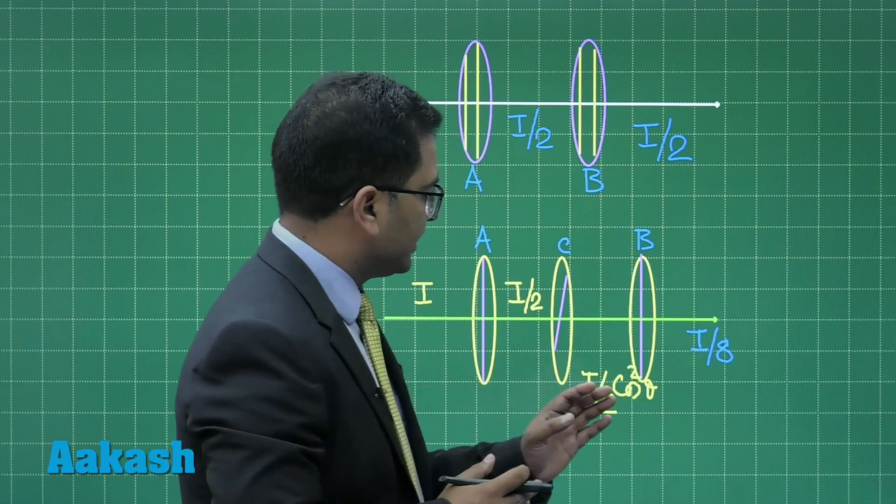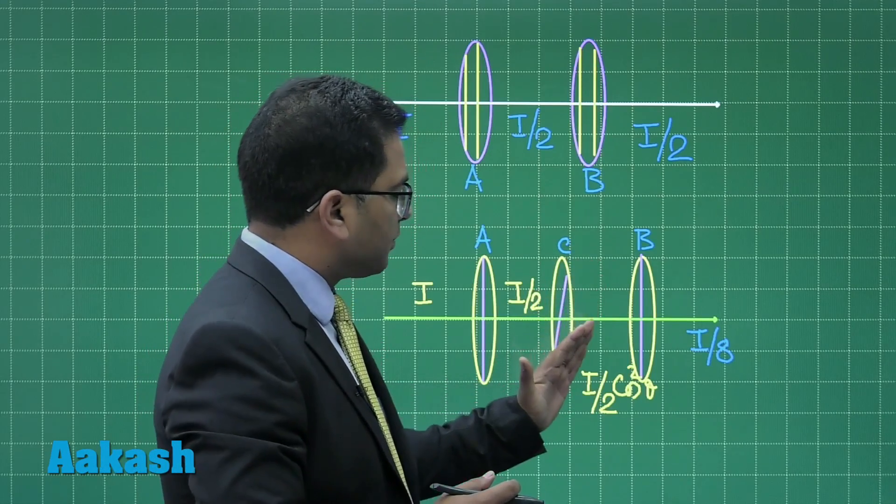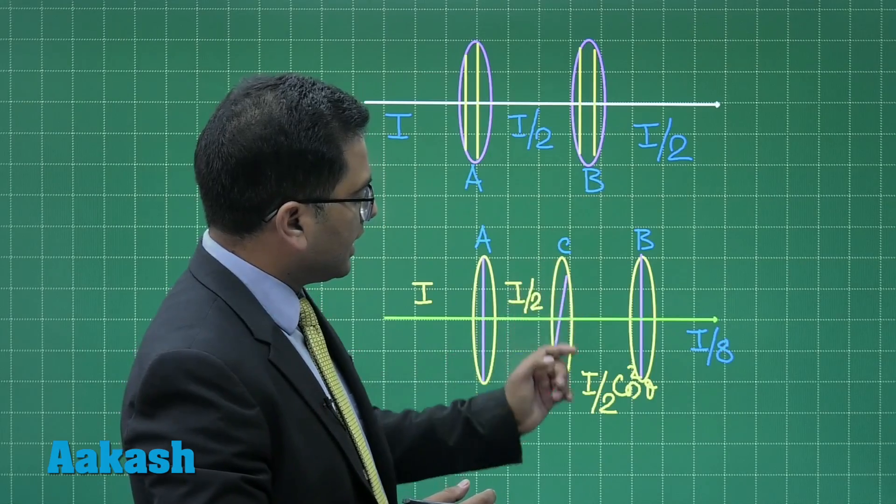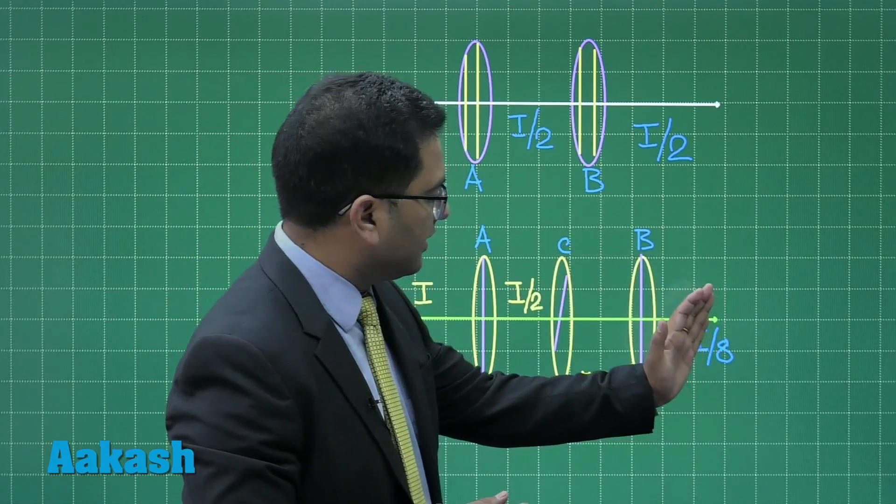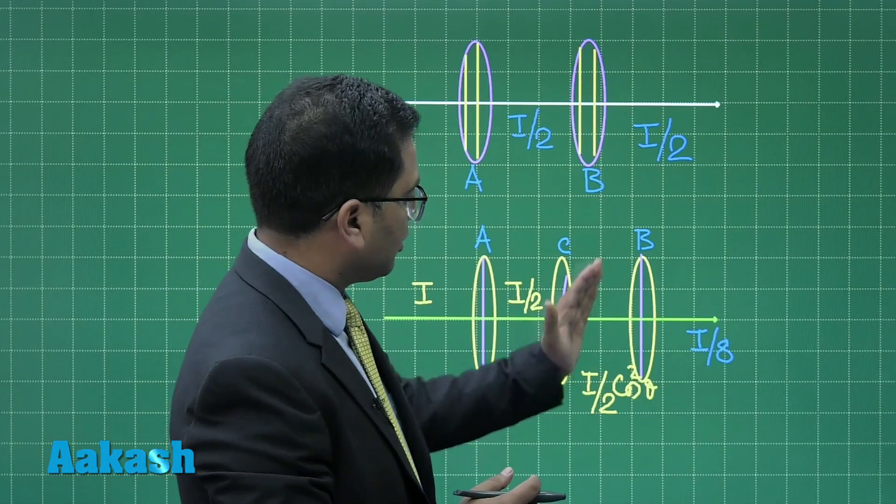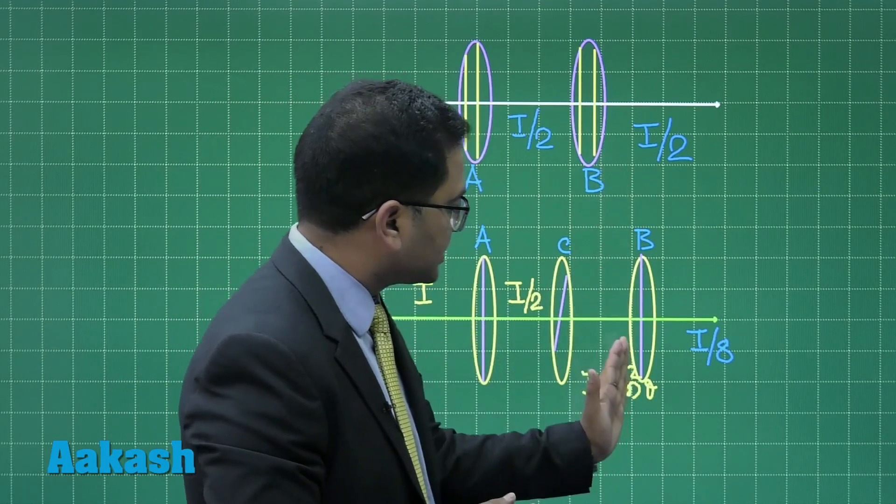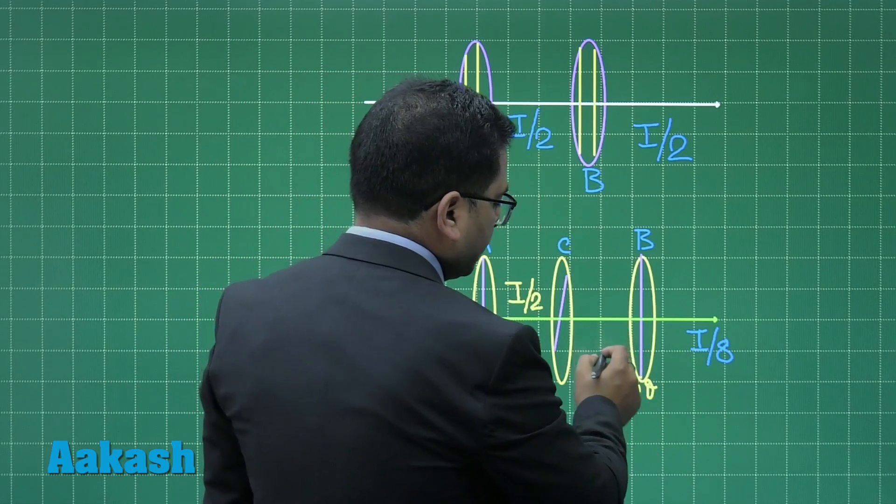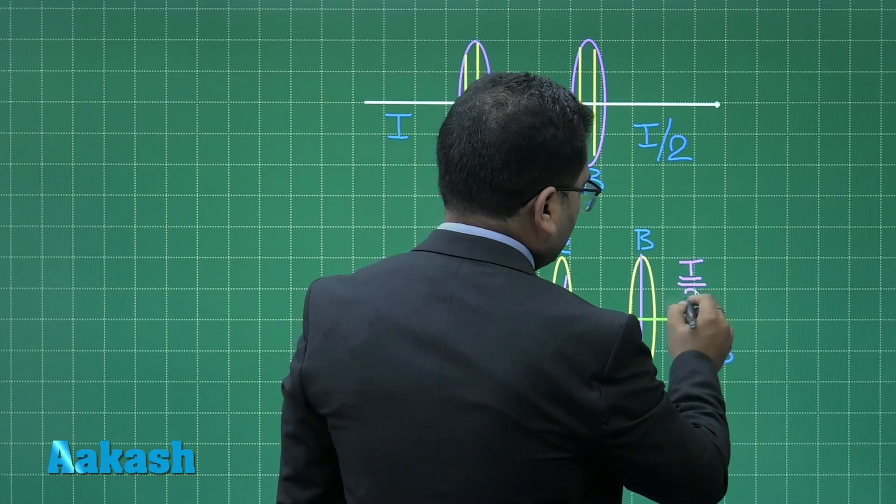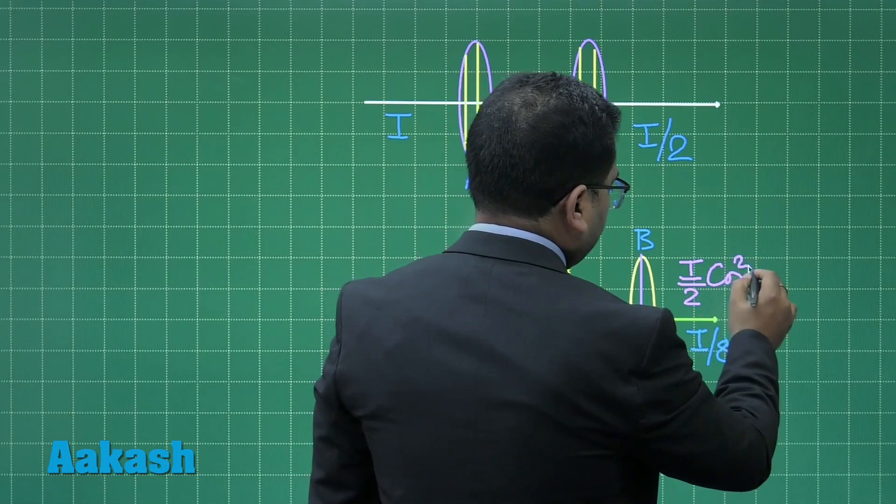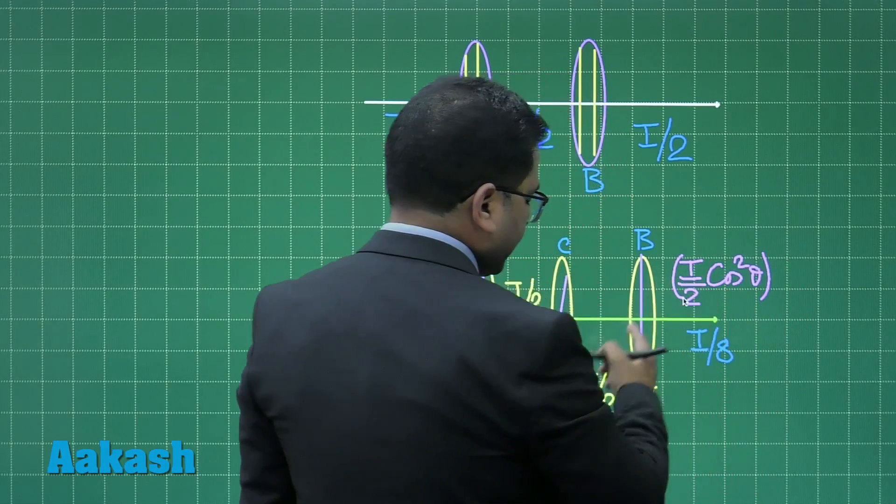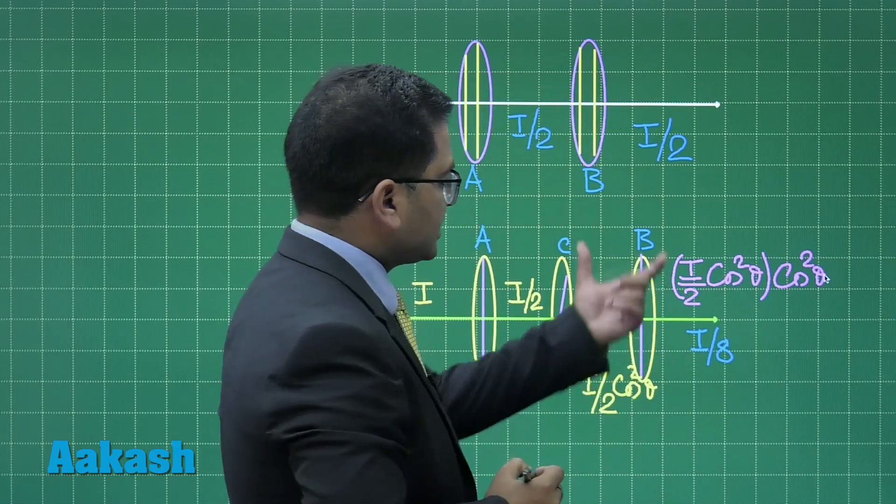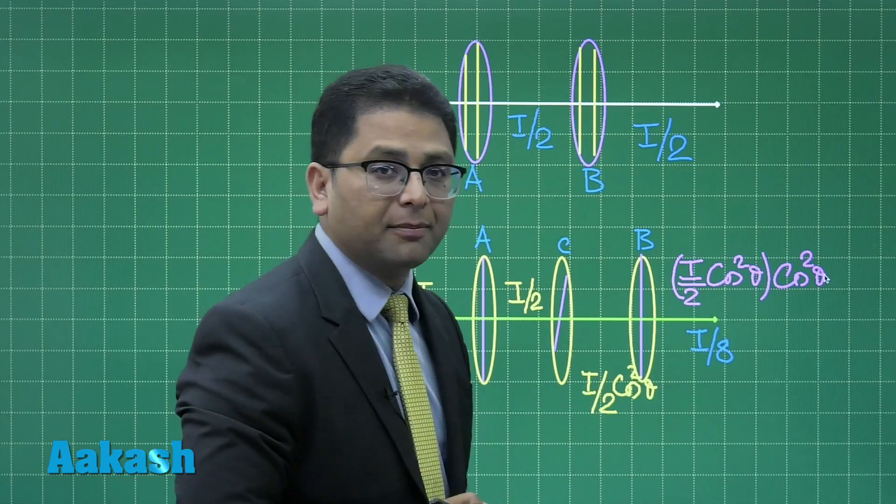The light which comes through C is plane polarized but the direction would be parallel to this one. Now this will pass through B, and the angle between the plane of polarization of this light and this would be theta. So again using the law of Malus, that would be I by 2 cos squared theta multiplied by cos squared theta, and this value is coming out to be I by 8.